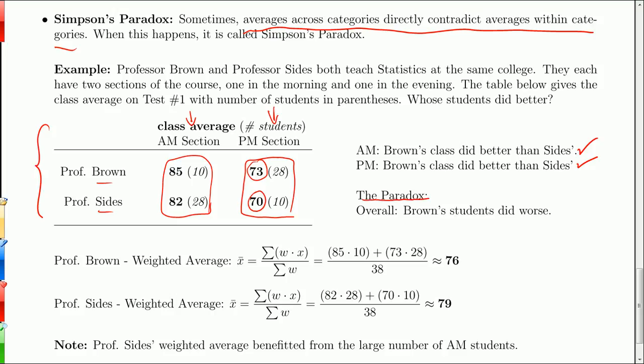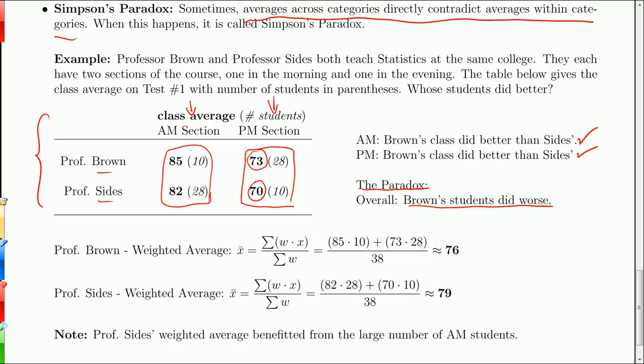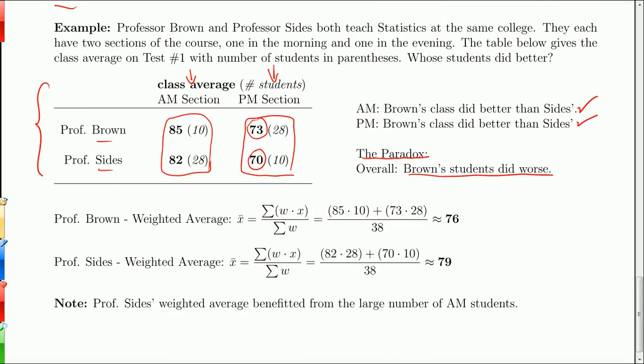Okay. So Brown did better. Brown did better. Overall, Brown's students did worse. That seems impossible, right? How can you do better in this category, better in some other category, and then wind up doing worse overall? Well, that's what Simpson's paradox is. And it basically has to do with the weighting, right?